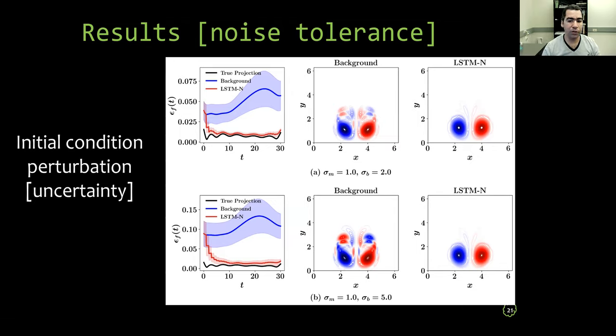Then we test the framework with different noise levels. So first we change the amount of initial condition perturbation with σ_b equal to 2 and 5. And we use the same LSTM nudging trained with σ_b equal to 1. We see that the framework is quite robust to this perturbation and still capable to provide sufficient correction.